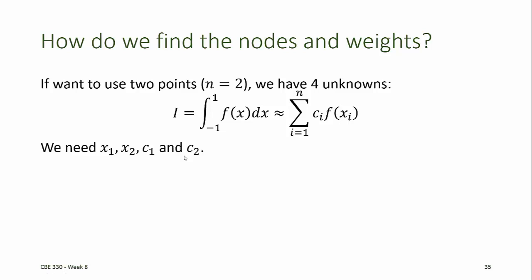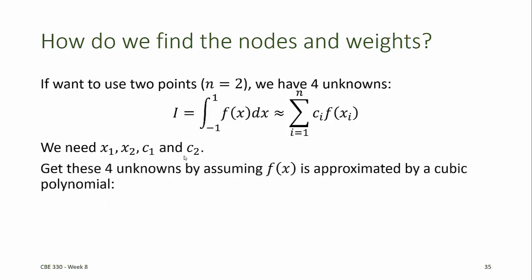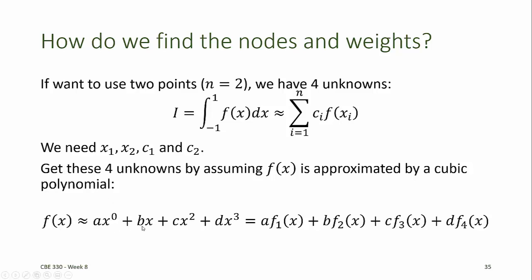Since we have four unknowns, we can approximate f(x) as a cubic polynomial. That is, suppose f(x) has the form ax to the zero (the constant term), b times x, c times x squared, d times x cubed.